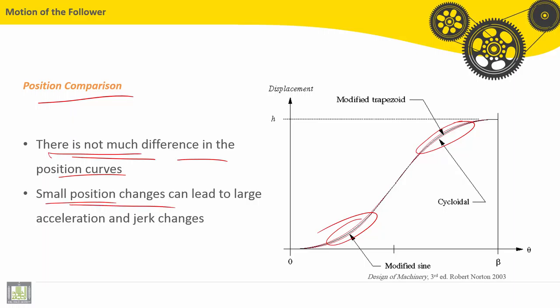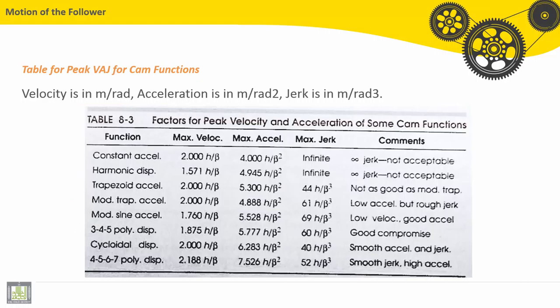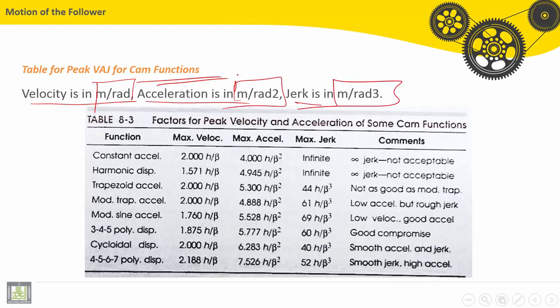This table presents the maximum values of velocity, acceleration, and jerk for cam functions. The units presented here for velocity is meter per radian, acceleration is meter per radian squared, jerk is presented in meter per radian cubed.